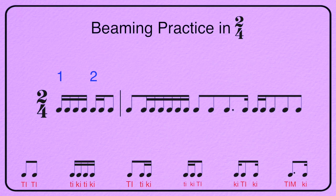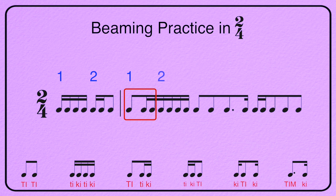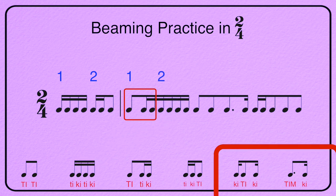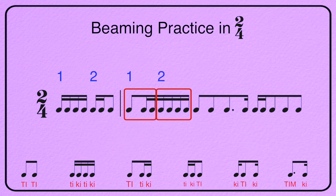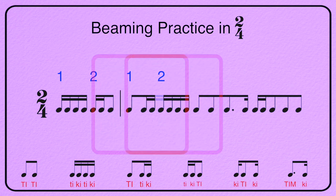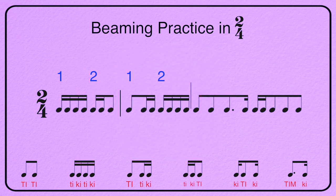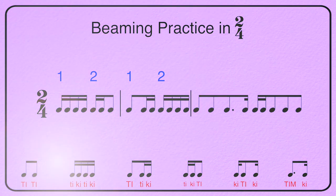Beat one starts here, and the first three notes will fill up our beat — an eighth and two sixteenths. Draw a beat box, and that shows us where beat two starts. The second beat has four sixteenths, and that's a rep. Break the beam between your beat boxes, and measure two is done.